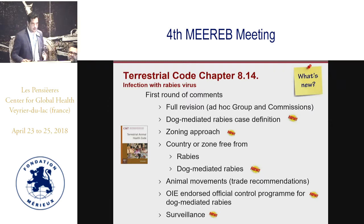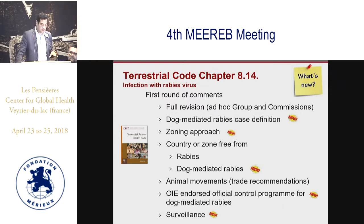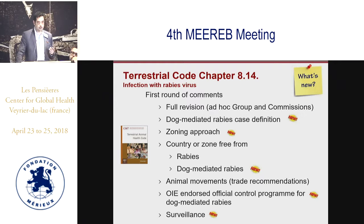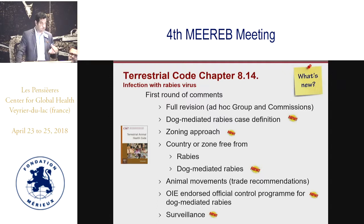Regarding freedom status, as discussed with colleagues from Croatia and Serbia, a country can currently self-declare free of rabies. With the new modification, countries will also be able to self-declare free of dog-mediated rabies, very much linked to the global strategy to achieve zero human deaths by 2030. This will be a new addition discussed during the next round of comments.